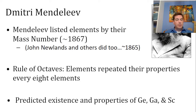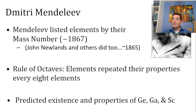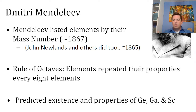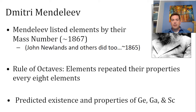Mendeleev came along — and he wasn't the only one; there's a guy named John Newlands and some others who had this idea too. But he said, why don't we make a list of all the elements based on their mass number, how heavy they are? The lightest elements like hydrogen would go first, and as you go along they would get heavier and heavier. He did that and he noticed something special that these other scientists did not notice, and so he gets credit for developing the periodic table.